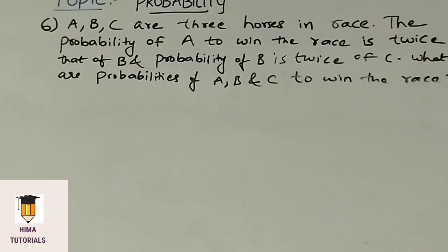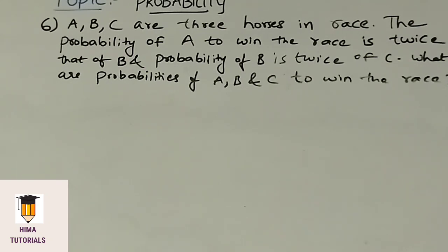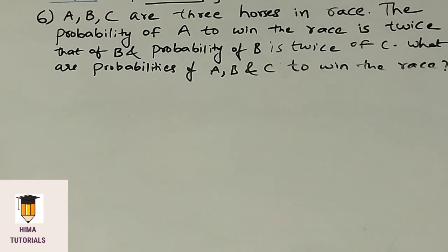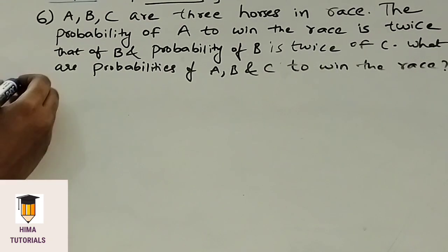Coming to the next question. A, B, C are 3 horses in a race. The probability of A to win the race is twice that of B, and probability of B is twice that of C. What are the probabilities of A, B and C to win the race? Coming to the solution.